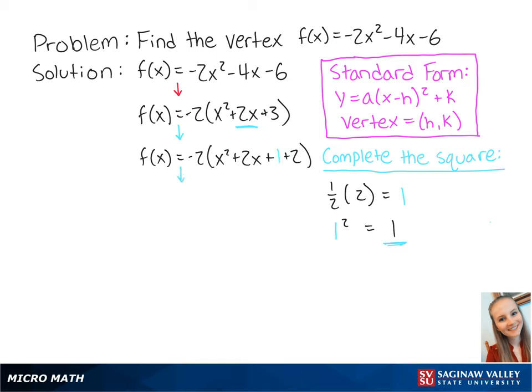Now we finally can complete the square, so we get f(x) = -2(x + 1)² + 2.